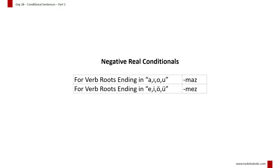First, let's look at how some verbs are made into the negative real conditional: Ben yapmazsam, sen gelmezsen, o bulmazsa, biz yemezsek, siz üzülmezseniz, onlar gezmezlerse.